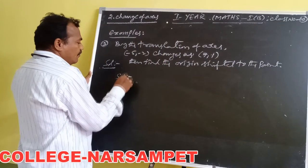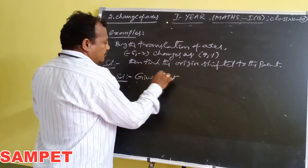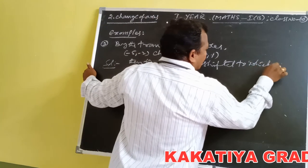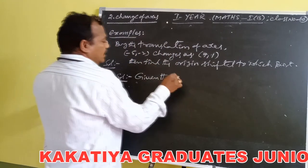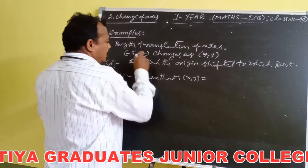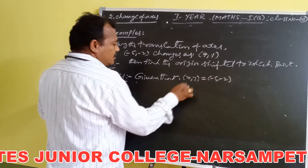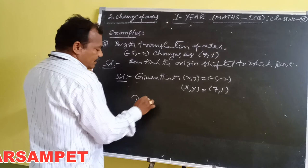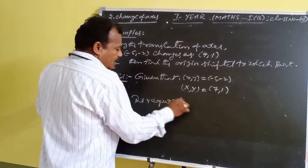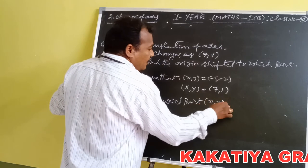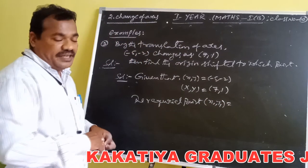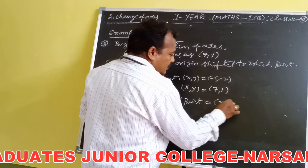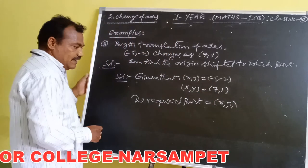Given: old system coordinate point is (−5, −2), so small x equals −5 and small y equals −2. The new system coordinate point is capital X comma capital Y equals (7, 1). The required coordinate point is x₁ comma y₁ — the point to which the origin is shifted, which we consider as x₁ comma y₁.